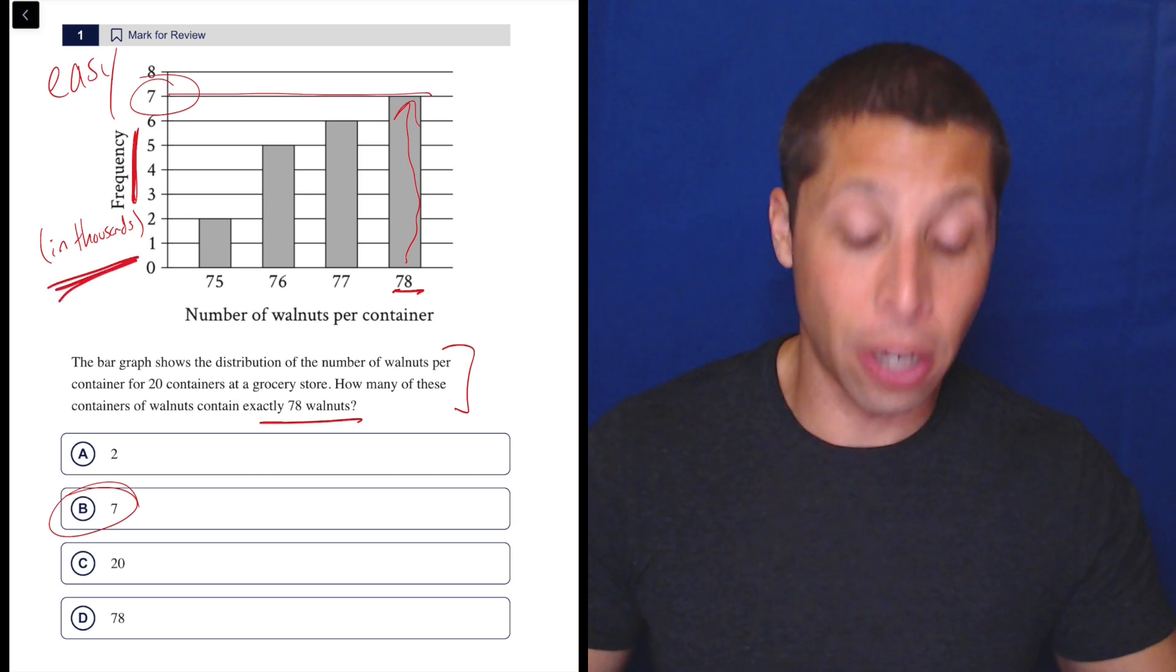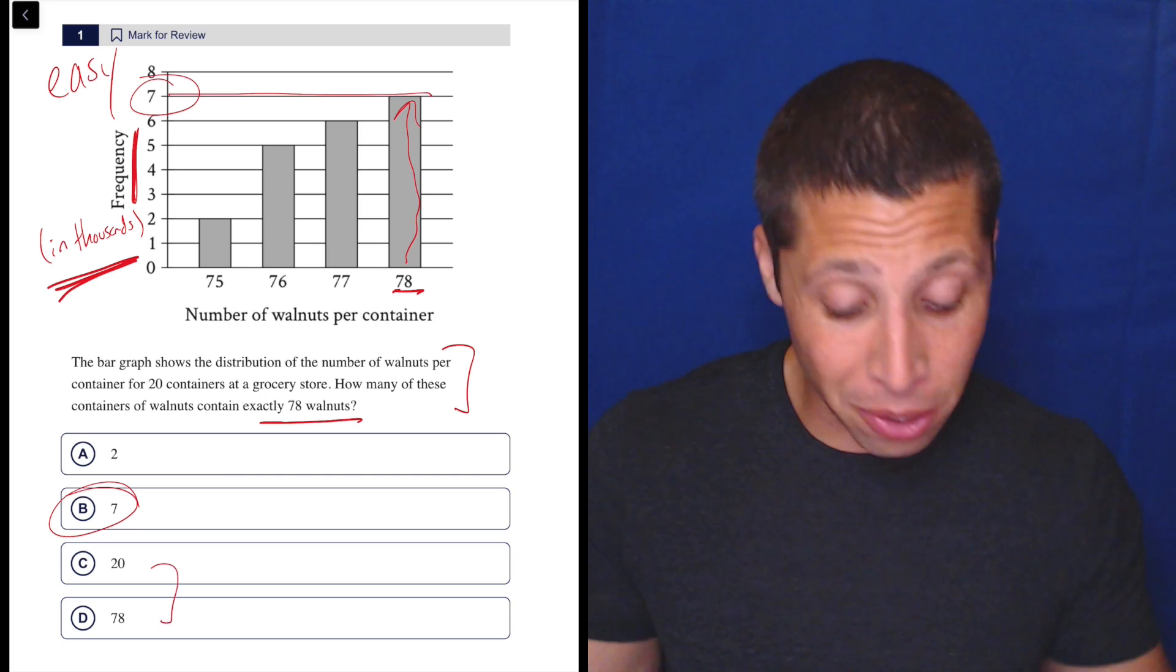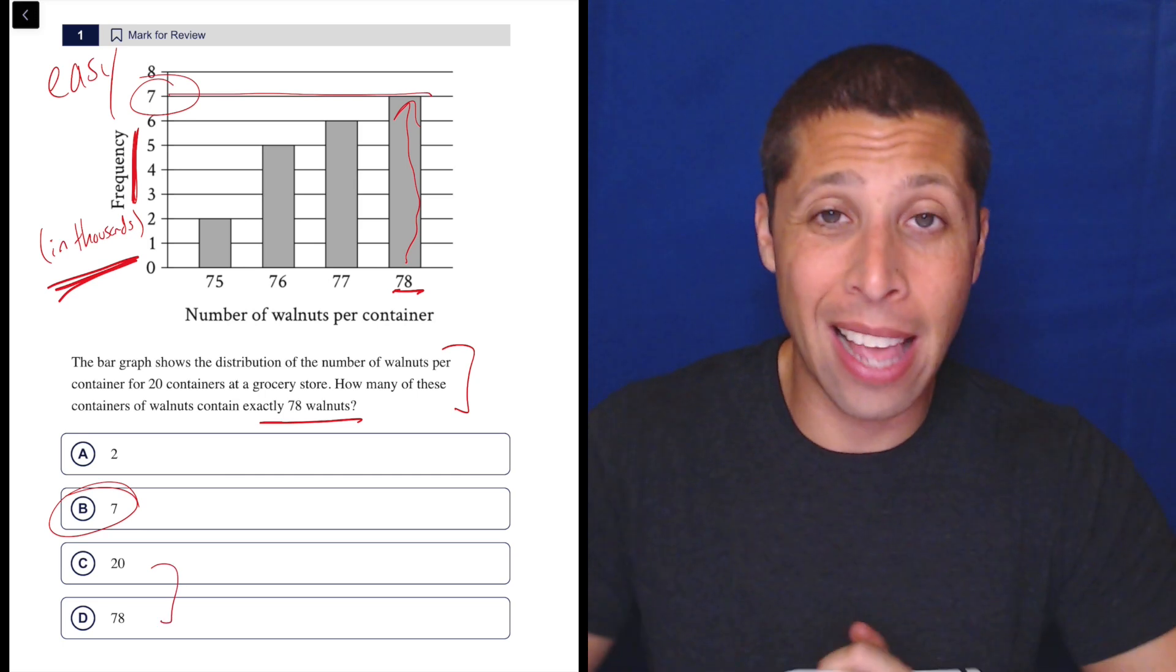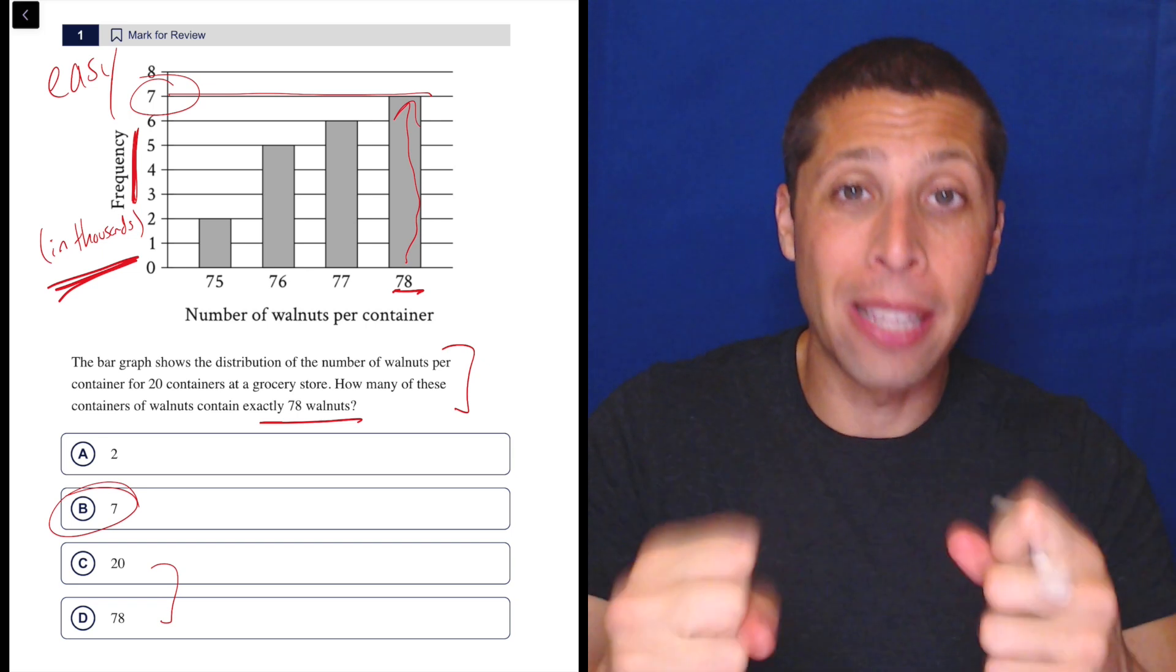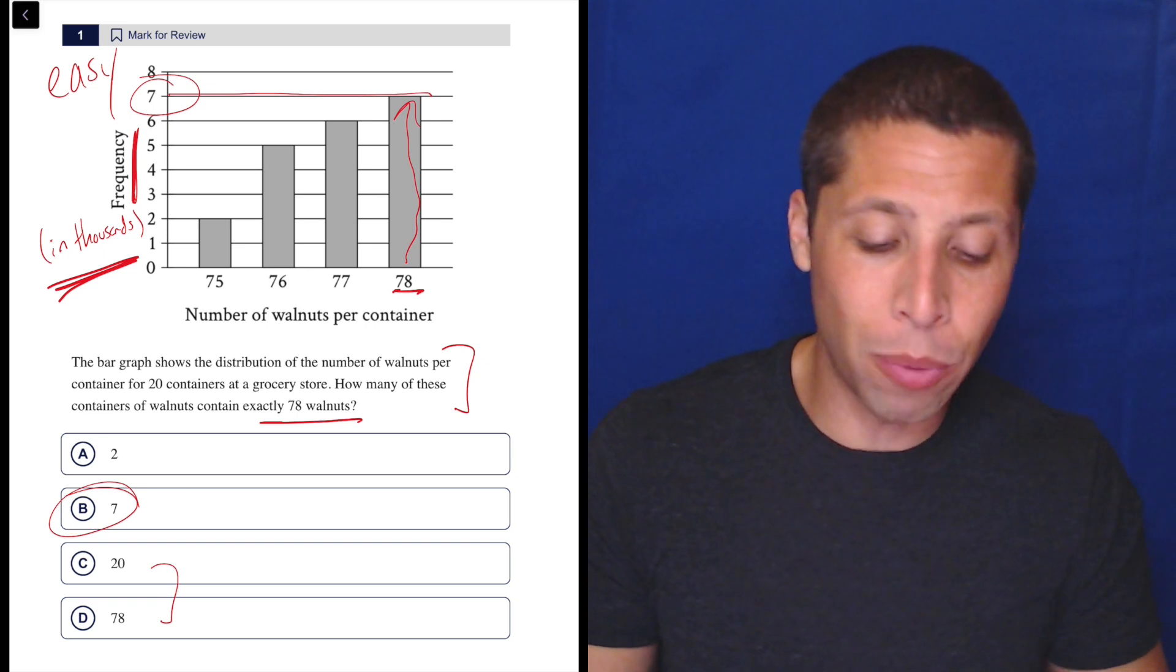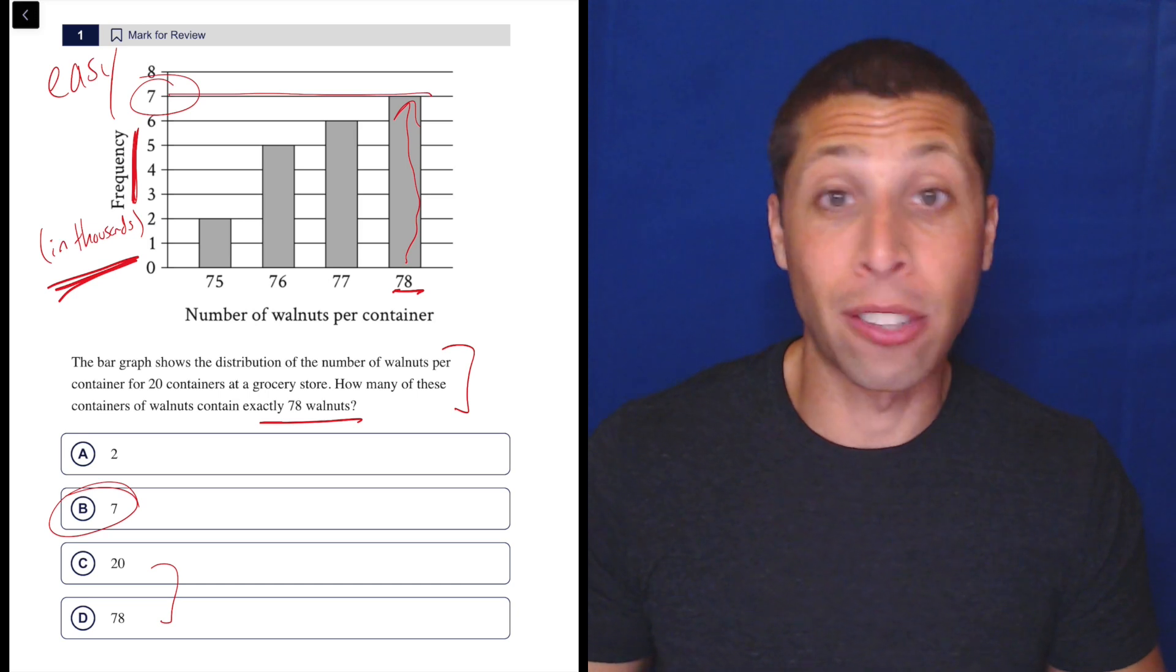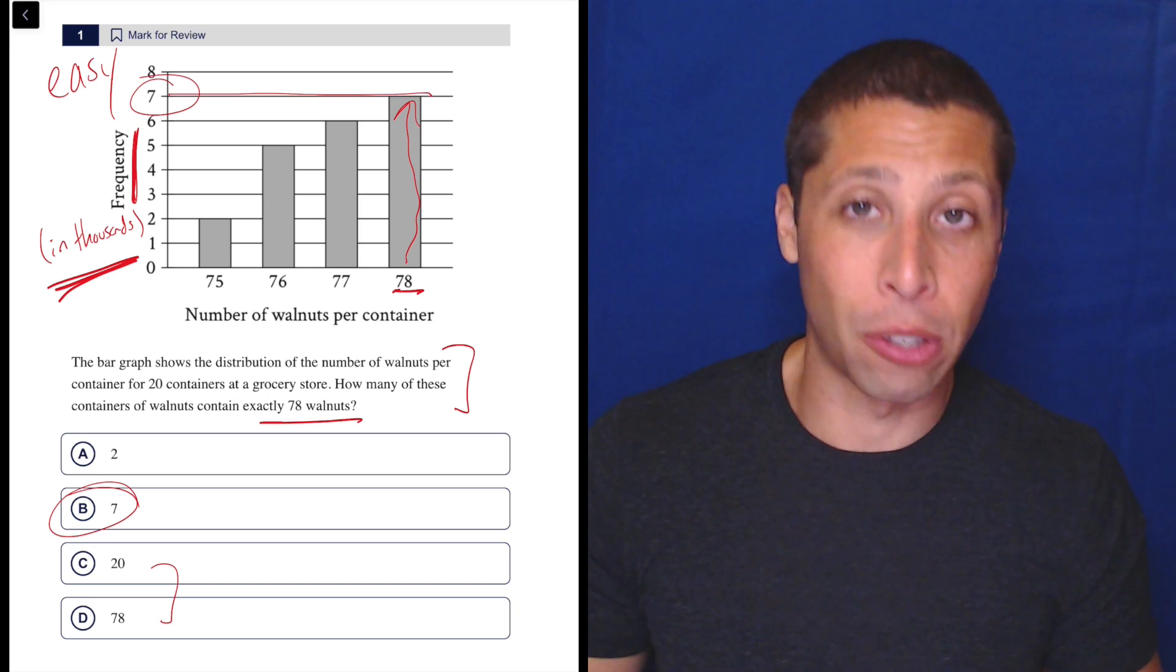They're definitely not doing that here. Maybe they're trying to mess with you with that. I don't know, somehow. But yeah, that could happen. And I have seen that be like the main trap in a question. So just always read the graph, read the axis labels, read the summary. And that's true for the reading section as well when they give us graphs there.